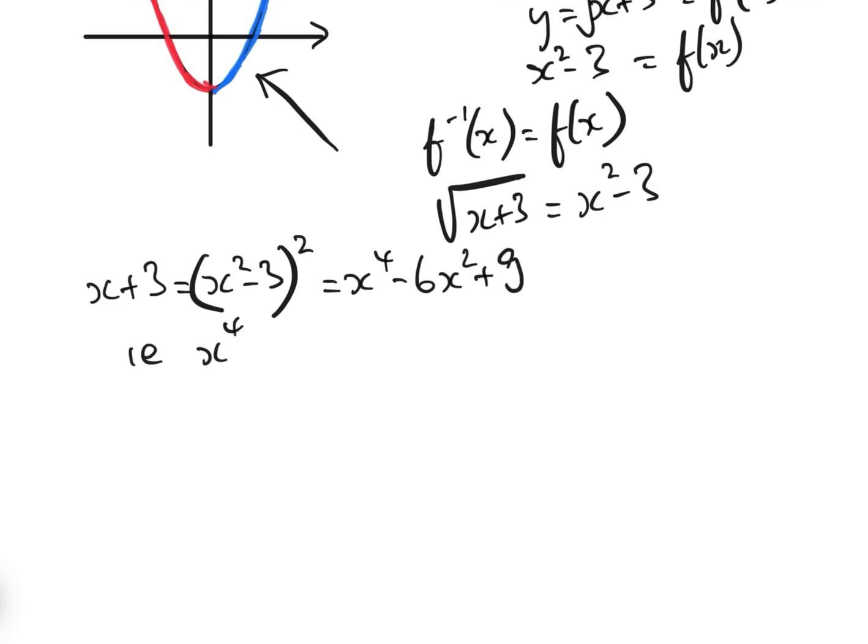i.e. we have a quartic here, x to the 4 minus 6x squared, minus x, add 6 equals 0, and we have to solve this quartic.